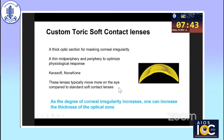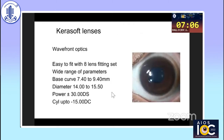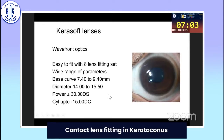When astigmatism increases, one has to move to custom toric soft contact lenses, which are thicker in the center and thinner in the periphery so that the physiology of the ocular surface is maintained. These custom toric soft contact lenses move more on the eye compared to standard soft contact lenses. As the degree of keratoconus increases, one can increase the thickness of the optical zone so the lens remains stable. Kerasoft IC is one such lens and it is easy to fit.